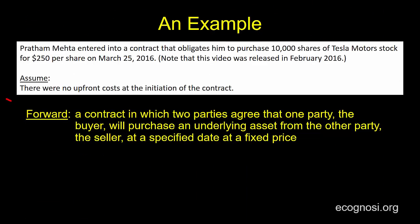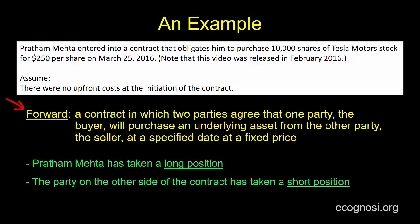Let's revisit our example, and as you can see, I'm keeping the definition as well. In this example, Pratam Mehta has agreed to buy Tesla stock, so based on the terminology we just introduced, he has taken a long position. If Pratam has agreed to buy, then there must be another individual that has agreed to sell — that party on the other side of the contract has taken a short position. Since there are only two sides, only two possible positions in a forward contract, expressing that the other party has taken a short position is redundant, though I've done so here to make it perfectly clear since we are still in the early stages of our understanding of forward contracts.